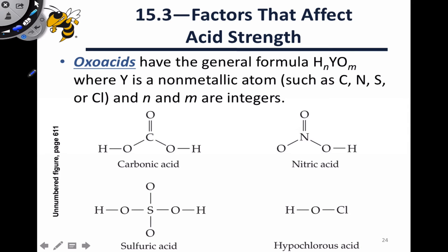A particular class of acids to which we can apply these ideas are the oxoacids, which have the general formula HnYOm, where Y is a central atom, a nonmetal typically, like chlorine, carbon, nitrogen, oxygen, sulfur, etc. N and M are integers and tell us the number of hydrogens and oxygens within a molecule. Examples are shown here: carbonic acid, nitric acid, hypochlorous acid, sulfuric acid, so on and so forth.